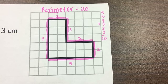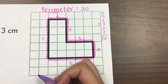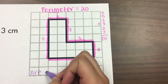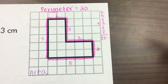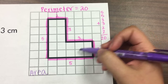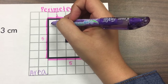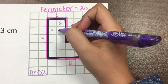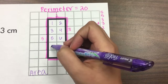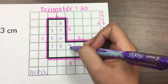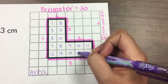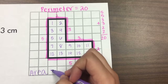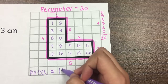Now we're going to be talking about area. Area is the inside of your irregular figure. So you can count all the cubes that are inside — 1, 2, 3, 4, 5, 6, 7, 8, 9, 10, 11, 12, 13, 14, 15, 16. So the area would be equal to 16 units.